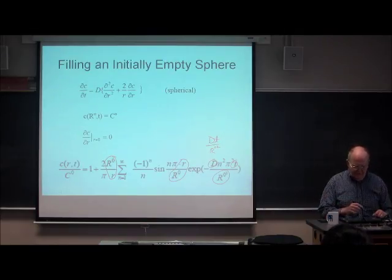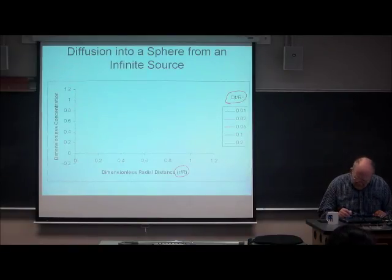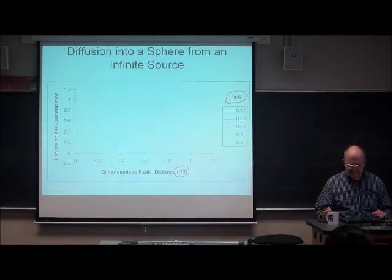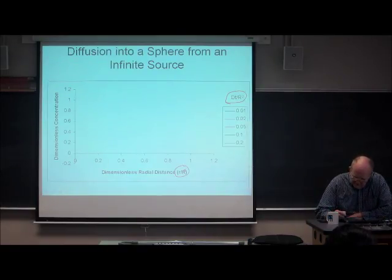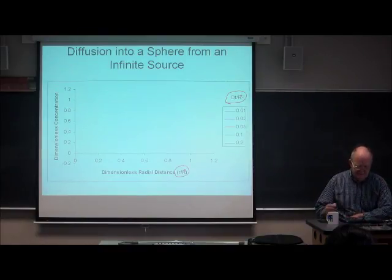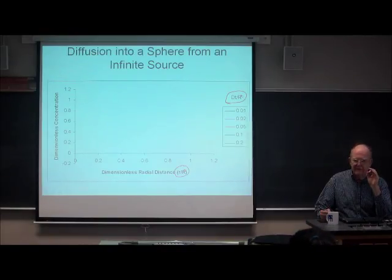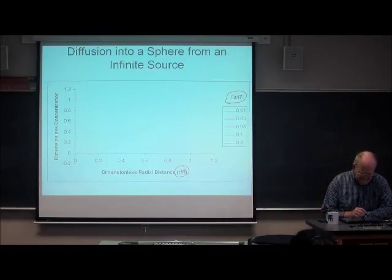So if you want to have a universal plot, your plot distance is r over r-naught, and the appropriate time variable is dp over r-naught squared. That's why. You have to start learning to think in terms of dimensions. It's very important — it will make your lives much easier whenever you're working with equations.